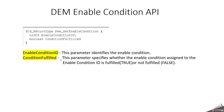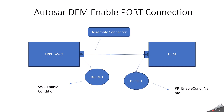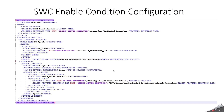The API for enable condition is Dem_SetEnableCondition. It has two arguments: enable condition ID and condition fulfilled, which is true or false. The enable condition ID identifies the enable condition. In an AUTOSAR configuration, on the application software component side we will have an R-port, and on the DEM side we will have a P-port. The R-port side has the enable condition operation, and based on your configuration this gets generated during base software configuration. These two ports need to be connected via an assembly connector. In the enable condition case, the application software component has the R-port and DEM has the P-port.